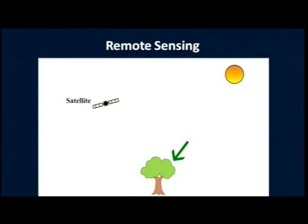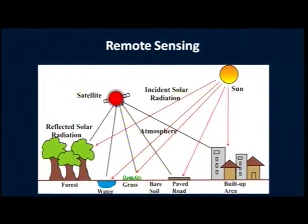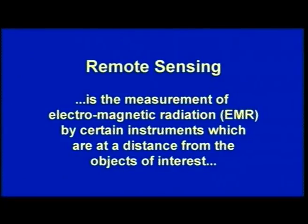You mentioned the three components of Geoinformatics technologies — remote sensing, GIS and GPS. We would like to know: what is remote sensing? As the name itself indicates, it is sensing from a distance. Basically, it means obtaining information about various objects and processes from a distance, like the way we obtain information using a camera. Scientifically, it is the measurement of electromagnetic radiation by certain instruments which are away from the objects, like cameras, like sensors on board spacecraft, etc.